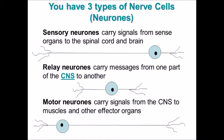Thanks for joining me again. This is my second video about nerve cells and the nervous system. Last time we were looking at how the nervous system was organized. The first thing we're going to look at today are the three types of nerve cells or neurons.